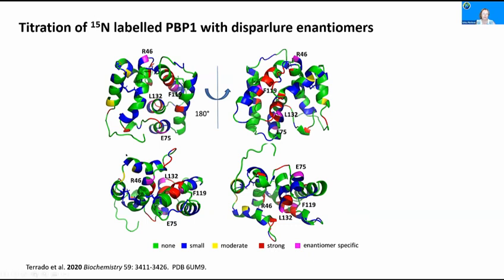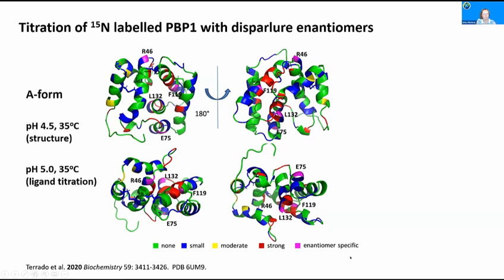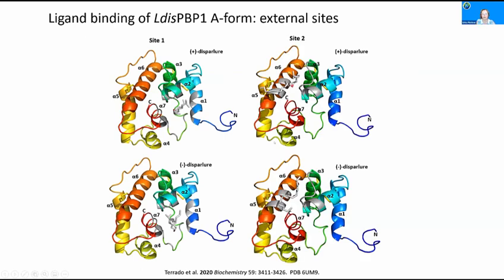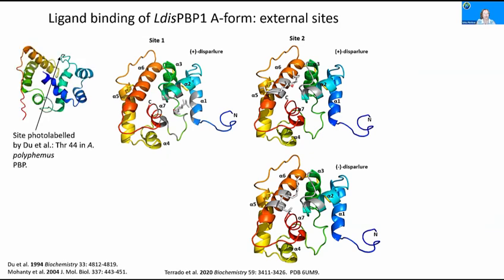We also did the opposite experiment focusing on the protein — with N15-labeled PBP1, we titrated in the two enantiomers and found some signals didn't move, others moved slightly, some moderately, some strongly. More importantly, we found four enantioselective-specific signals. We got the structure of the so-called A form of the protein, obtained at low pH, where the C terminus is inserted in the internal binding site — so this form only has external binding sites. When we docked the ligand into the two external binding sites, we determined the ligand is bound enantioselectively. We are not the first to notice an external binding site of PBPs — in 1994, Gehuadu photo-labeled the anterior polyphemous PBP and ended up labeling the loop between helices alpha-2 and alpha-3 on the surface, which is what we call site two.